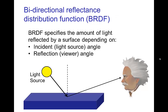Finally, the specification of how a surface reflects is encapsulated in the bi-directional reflectance distribution function, or BRDF. This function takes the incident angle of the light source and the reflection angle — the angle of the light ray going back to the viewer or camera — and tells you the amount of light reflected by the surface in that geometry. Those angles don't necessarily have to be in the same plane, so this can be a rather complicated function.